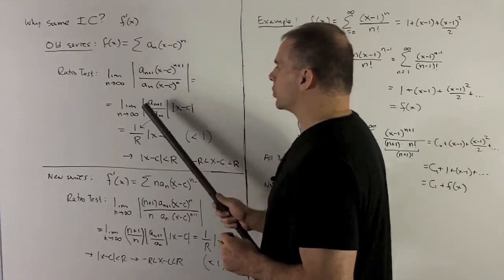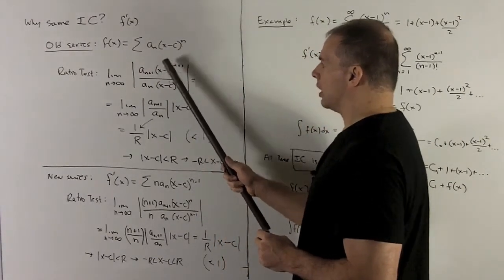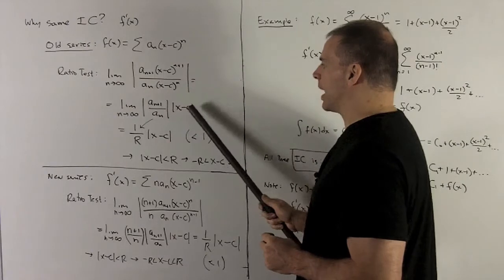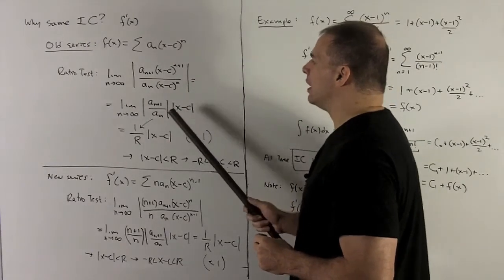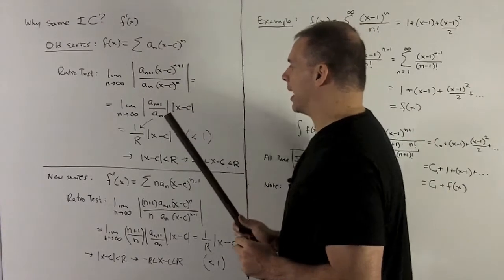We're going to take the limit. So what's going to happen here is we take limit as n goes to infinity, I'll be left with cancellation leaving me with |x-c|.